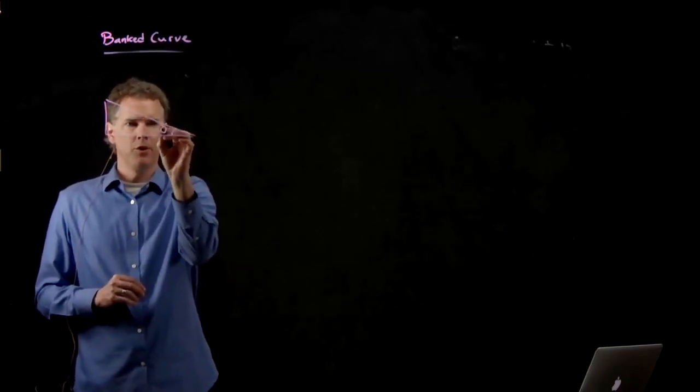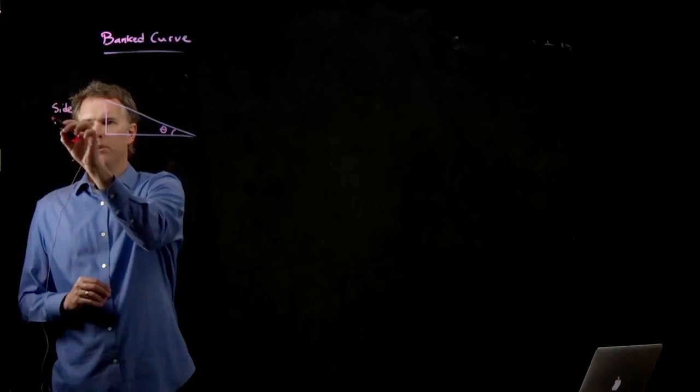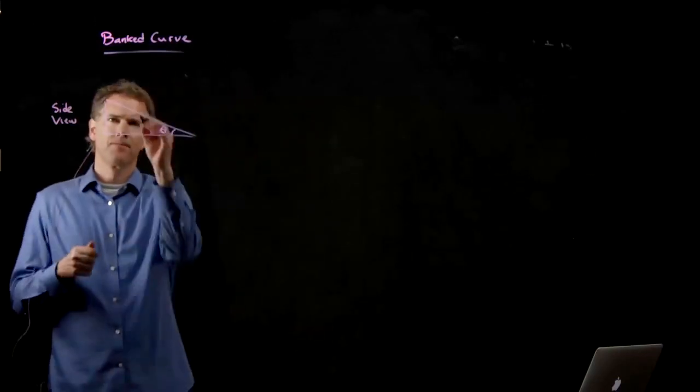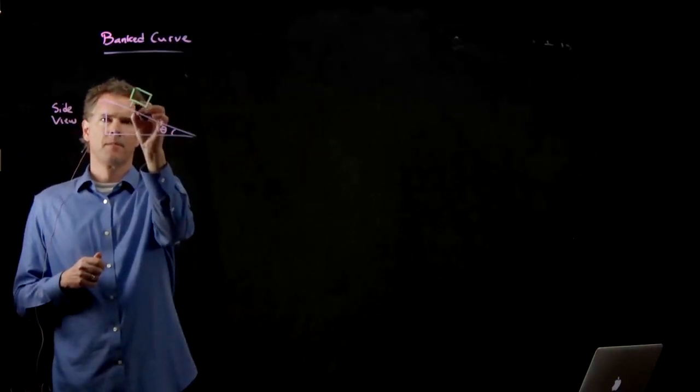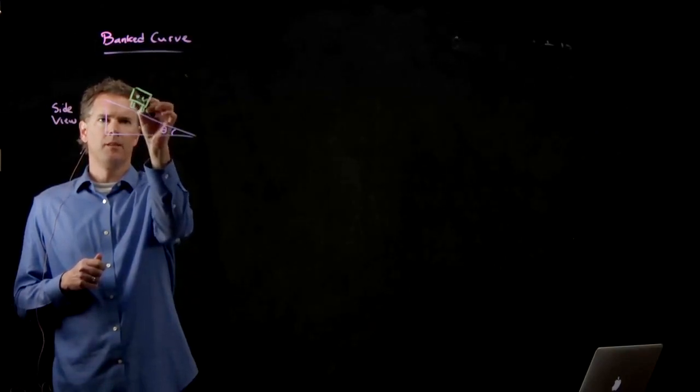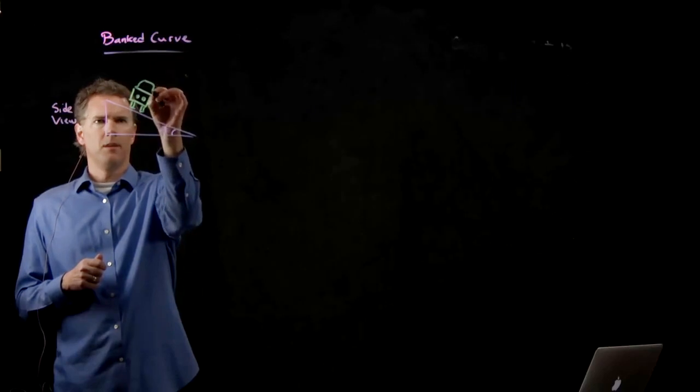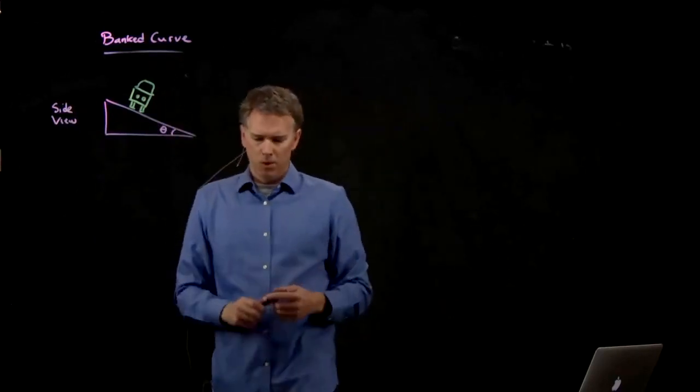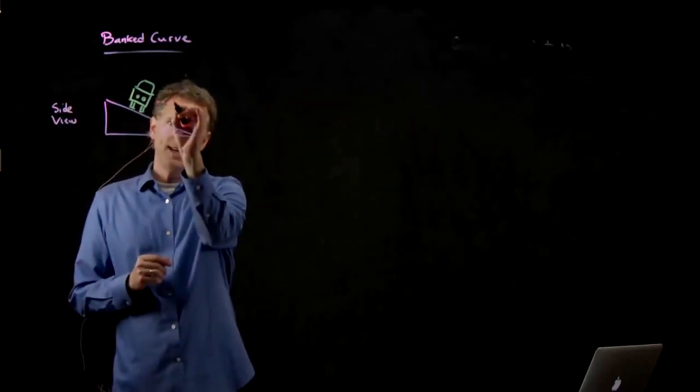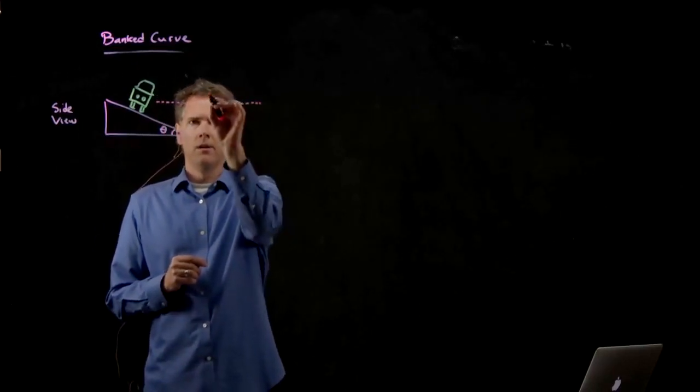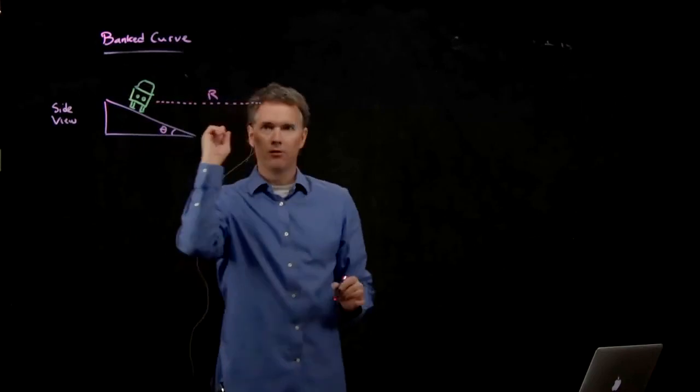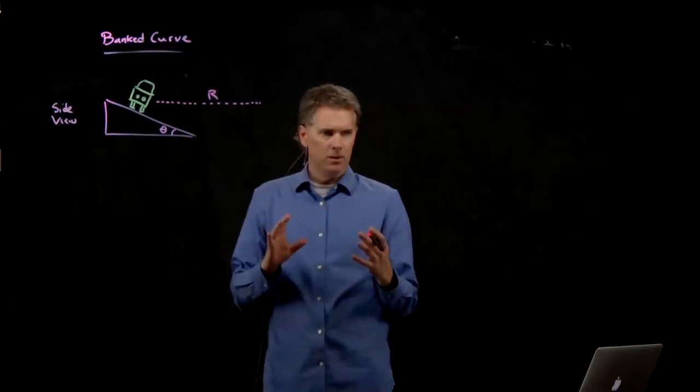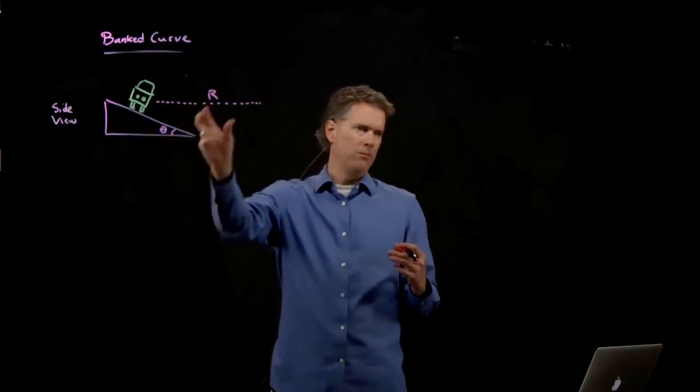So here's your banked curve. This is the sort of side view or the end view. Our car is right here. There's the wheels, here's the headlights, here's the top of the car. And this thing is coming towards you like that, which means it's going around a radius R like so. This is the car on the banked curve going around like that. Let's see if we can figure out what the relationship is between the V, between the theta, between the R.